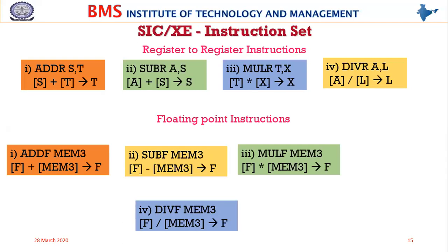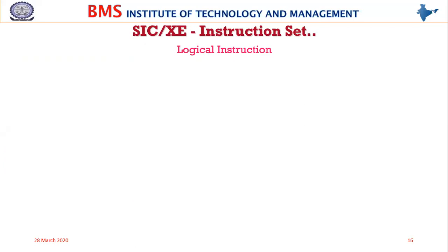Floating-point arithmetic instructions are represented as ADDF, SUBF, and similar. One operand must be in the floating-point accumulator F, which is the 48-bit register, and the other operand must be present in memory as 48 bits. For example, ADDF M3 means F contents will be added with memory location 3 and the result stored in F. Similarly, DIVF M3 divides F by memory 3 contents and stores the result in F. The destination operand in floating-point operations is always the floating-point accumulator F.